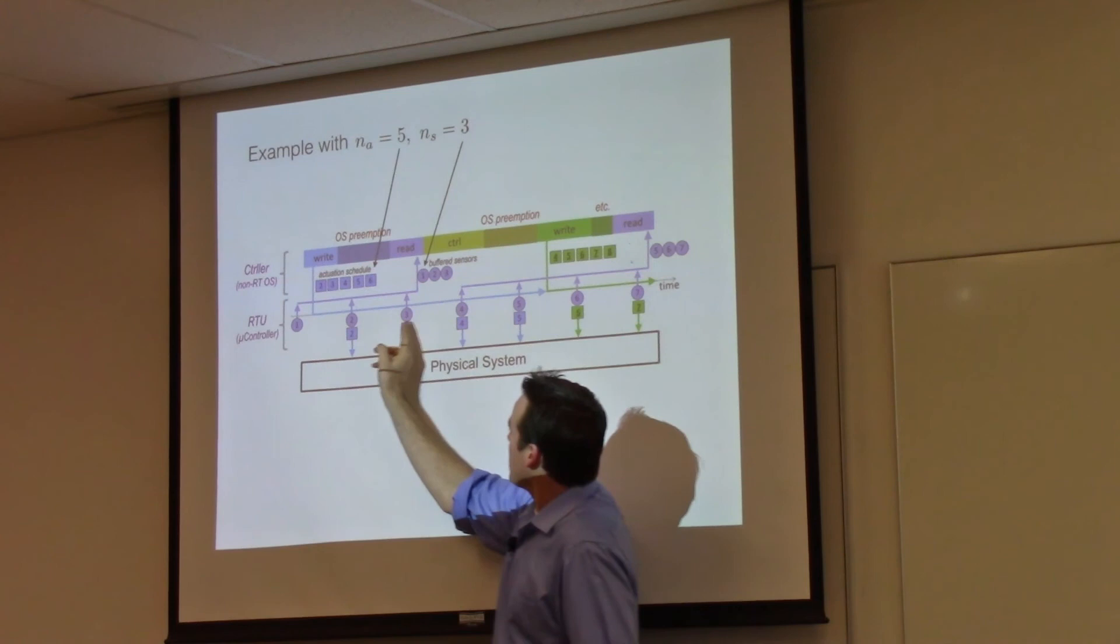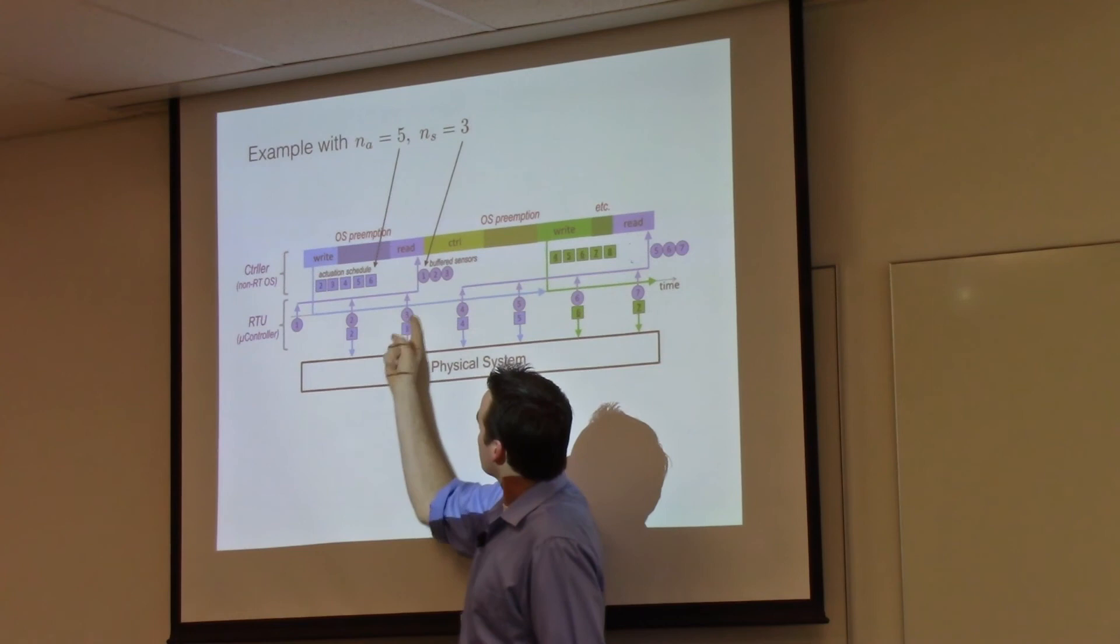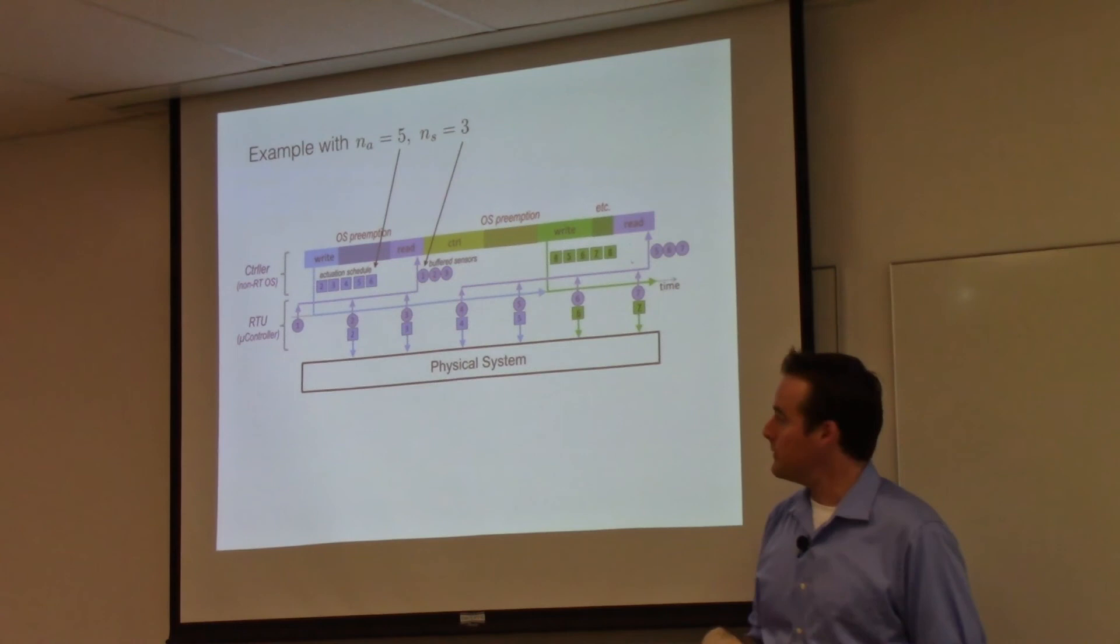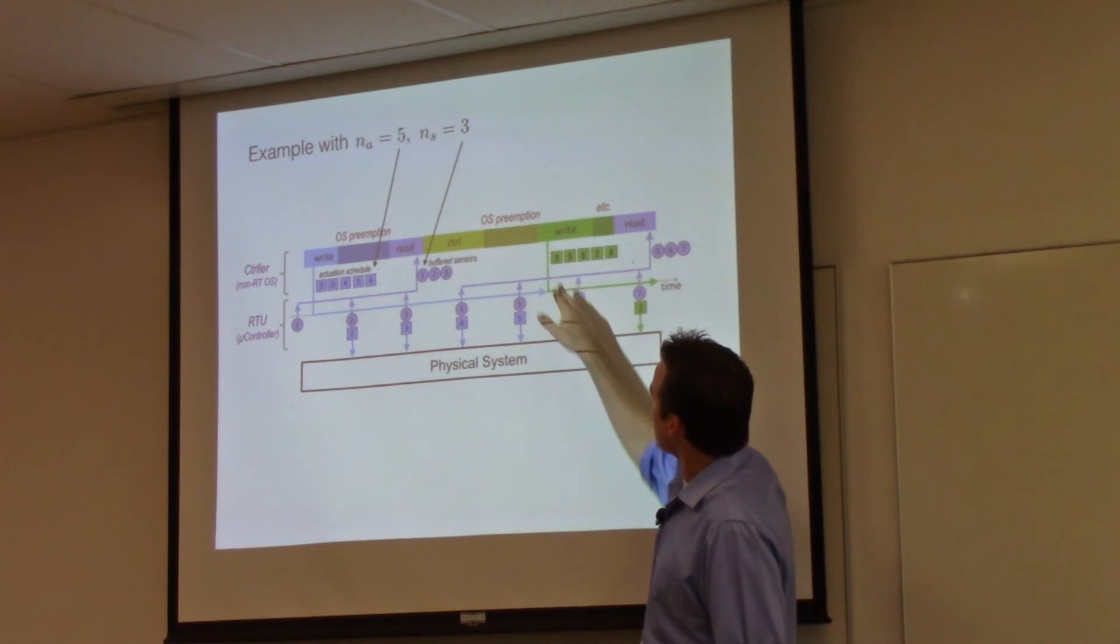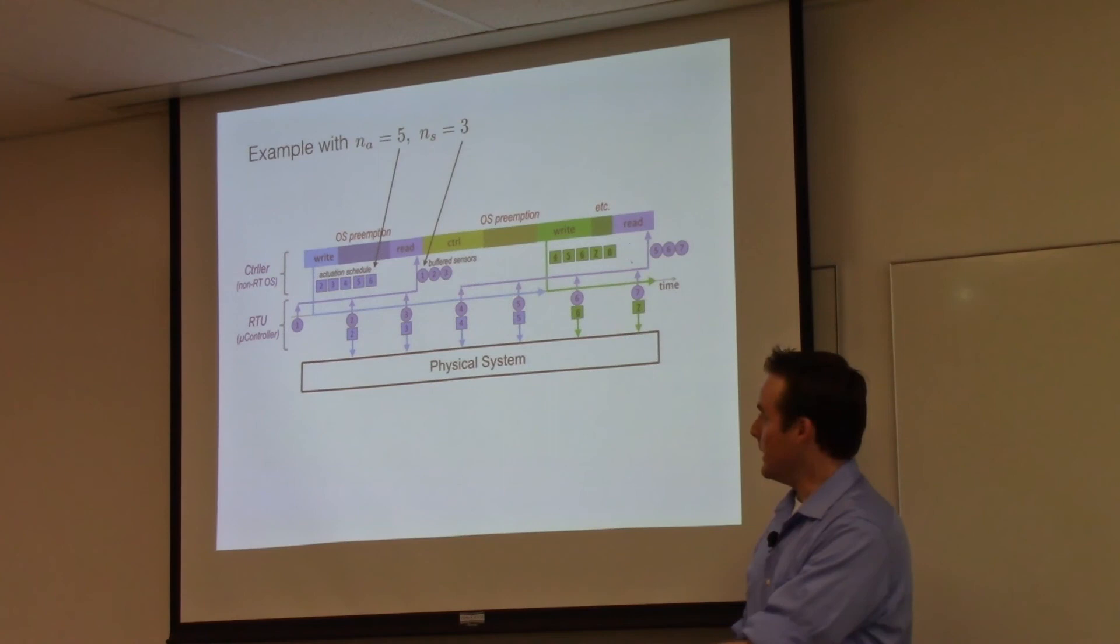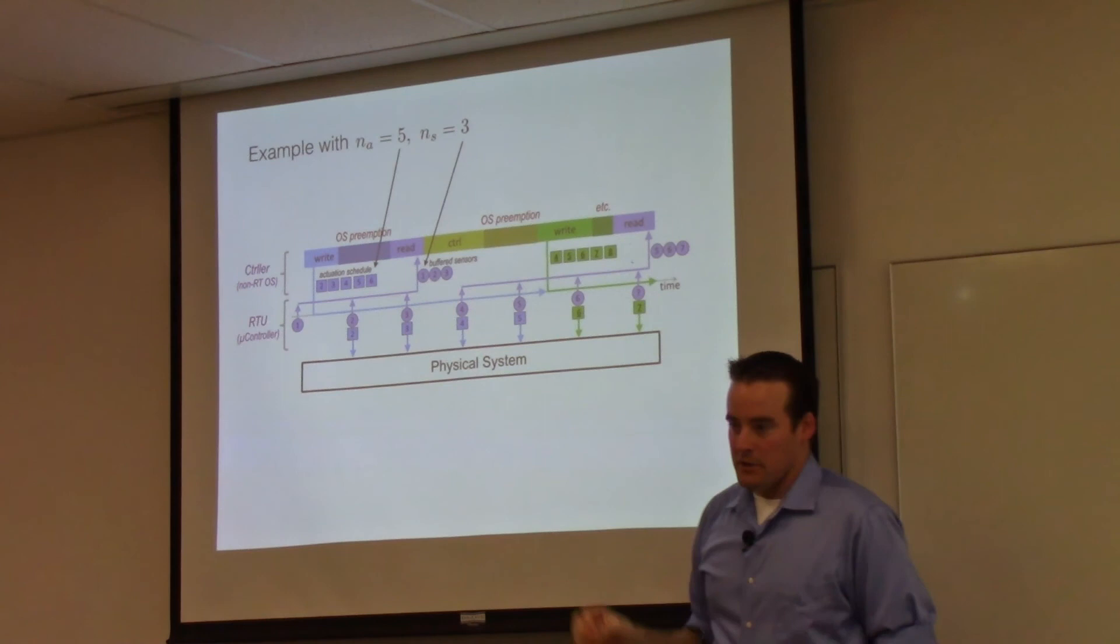In the meantime, the RTU is also sampling at very precise times, those purple circles. When the controller calls read, it gets to collect all of the buffer sensor values that it missed, that happened since the last time it called read. Then the controller gets to do the control. It might get preempted. At the end of the day, it has computed a new vector of actuator values to assign to the RTU. These are the green ones here. So it delivers them, and then the RTU takes it and runs with it.